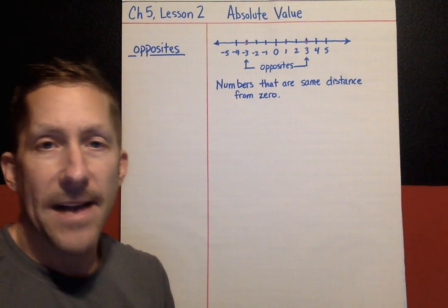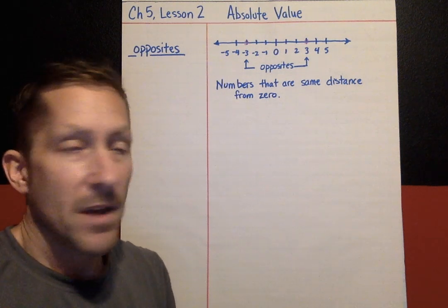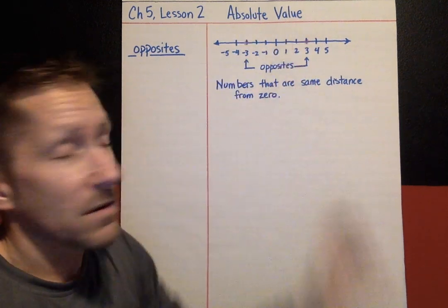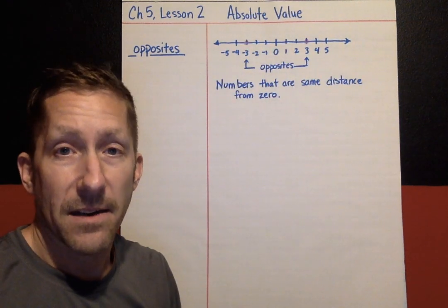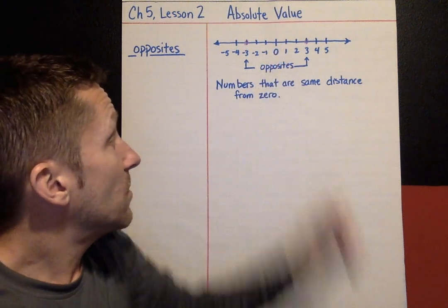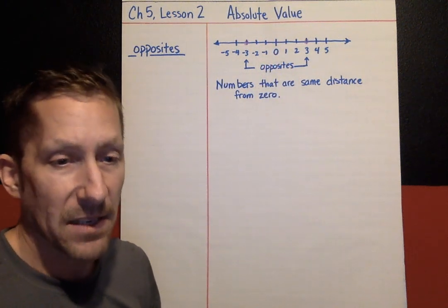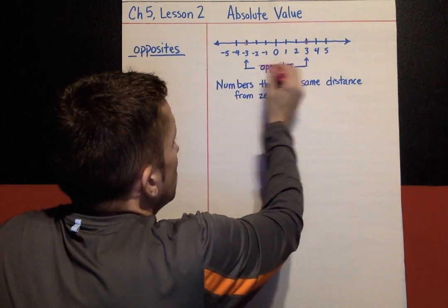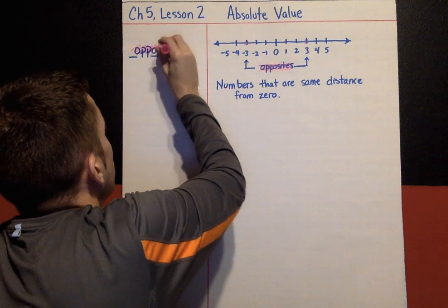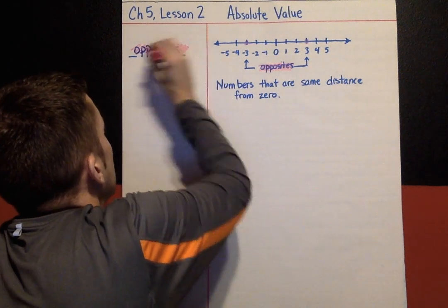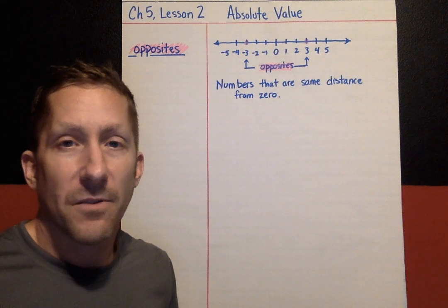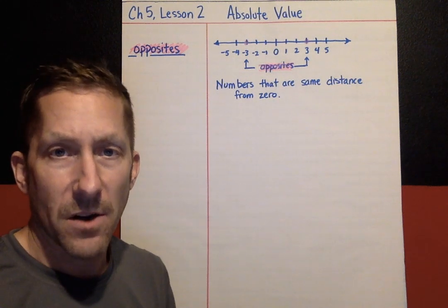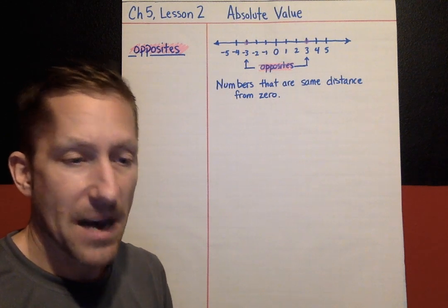Here's kind of a tricky one. What if I asked you the opposite of zero? If you fold the number line, where is zero going to land? It's going to land on itself. So zero is actually its own opposite — the opposite of zero is zero. For any other number, just imagine folding across zero, and where that number lands is its opposite.